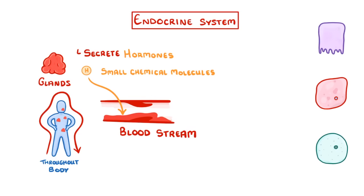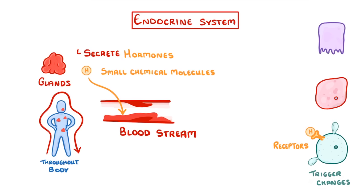Some of these tissues — and it's important that it's only some of these tissues, not all of them — will have receptors that are specific to the hormones. And so the hormone molecules can act as signals to trigger certain changes inside the cells.